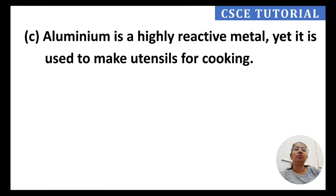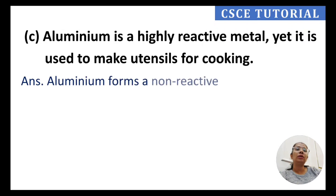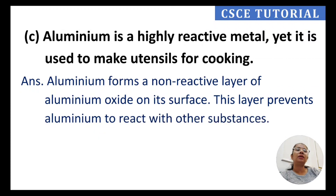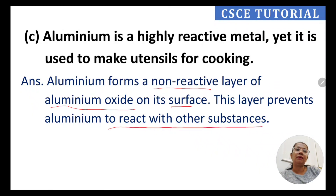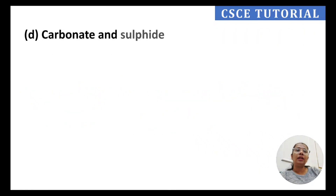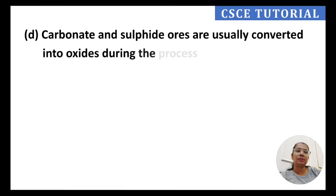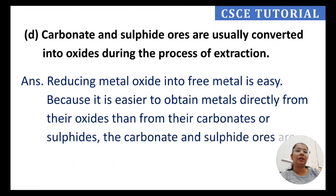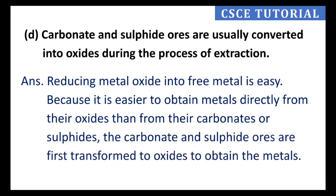Part C: Aluminium forms a non-reactive layer of aluminium oxide on its surface, which prevents aluminium from reacting with other substances. Part D: Carbonate and sulfide ores are usually converted into oxides during extraction because it is easier to obtain pure metals from oxides than from carbonates and sulfides. The ore is first converted to oxide, then pure metal is extracted.